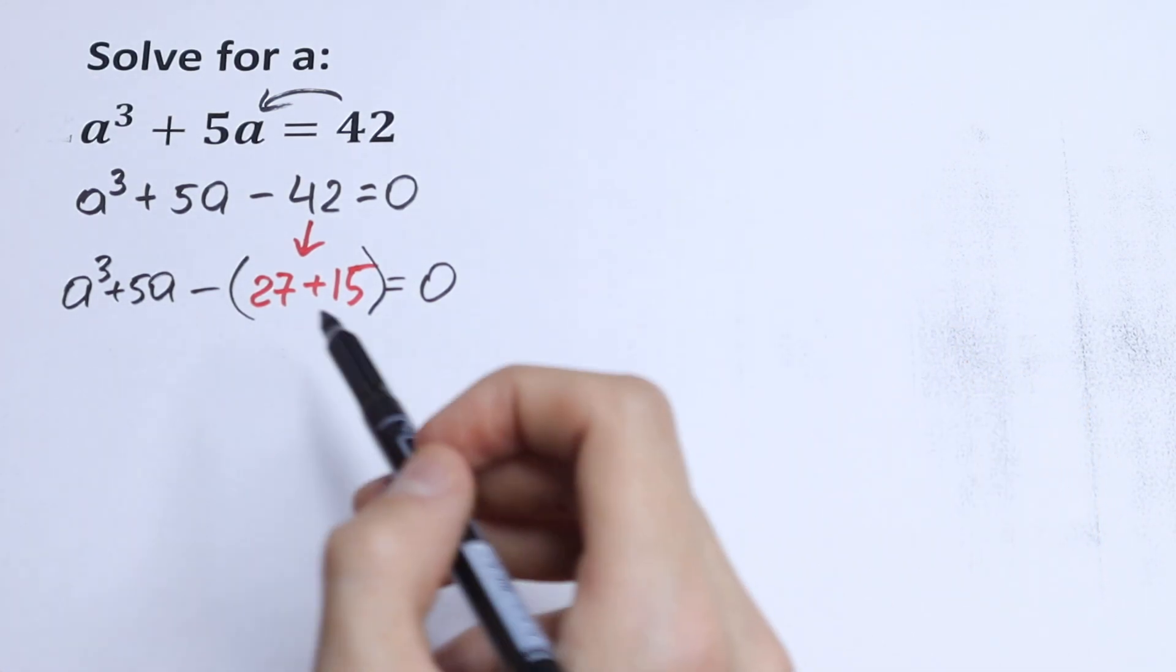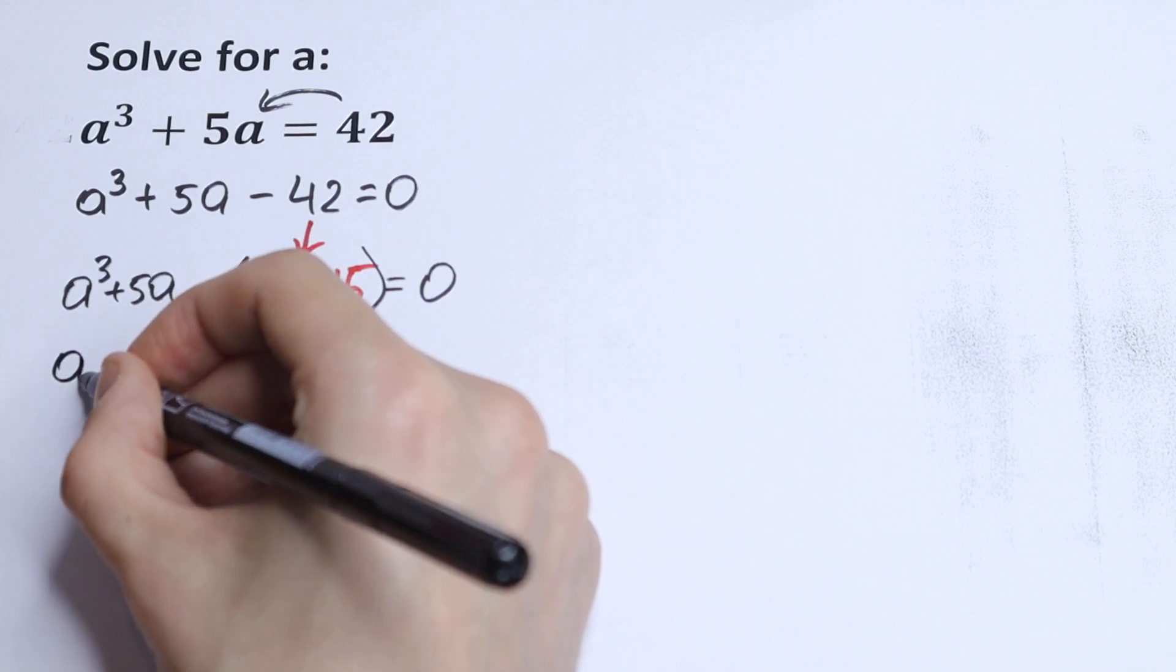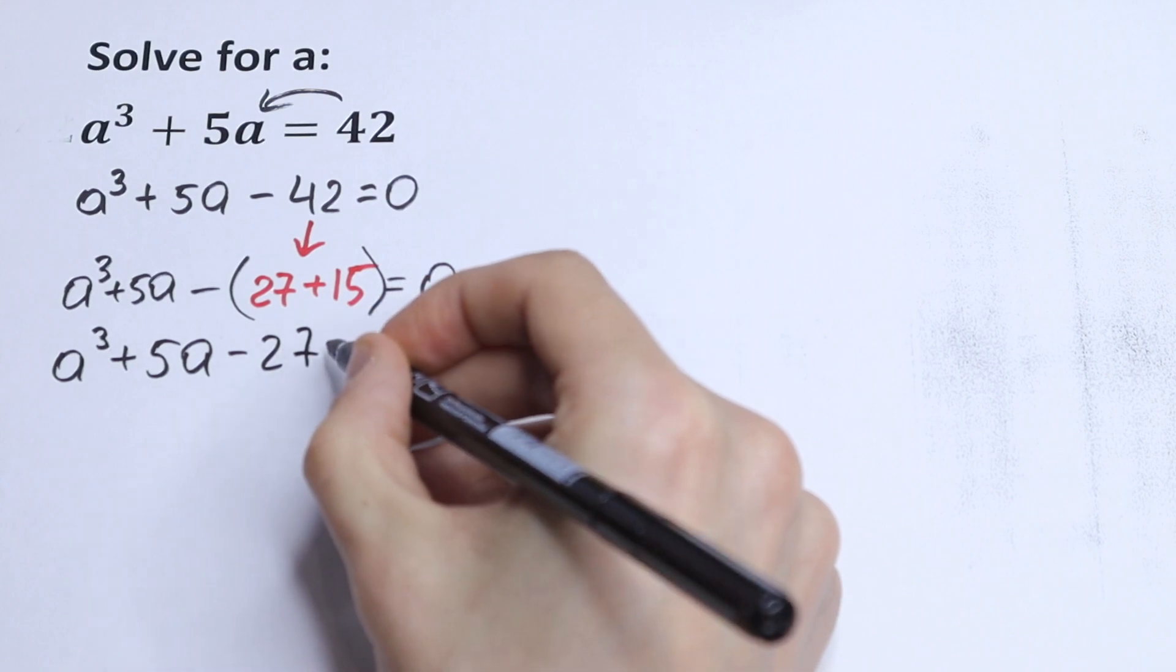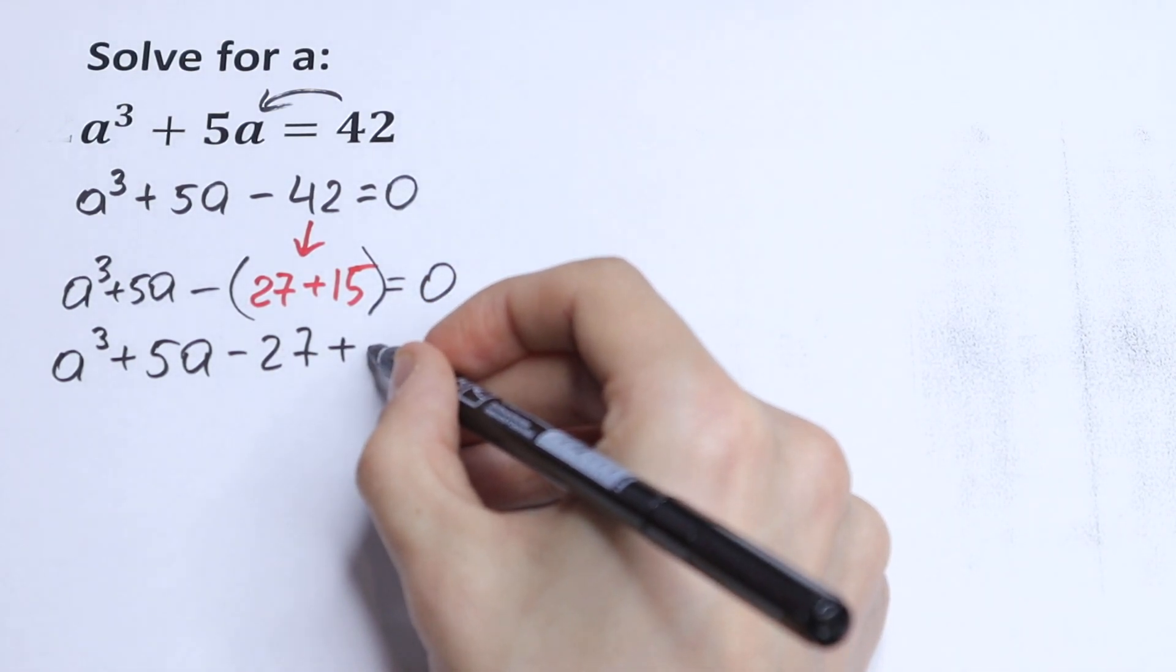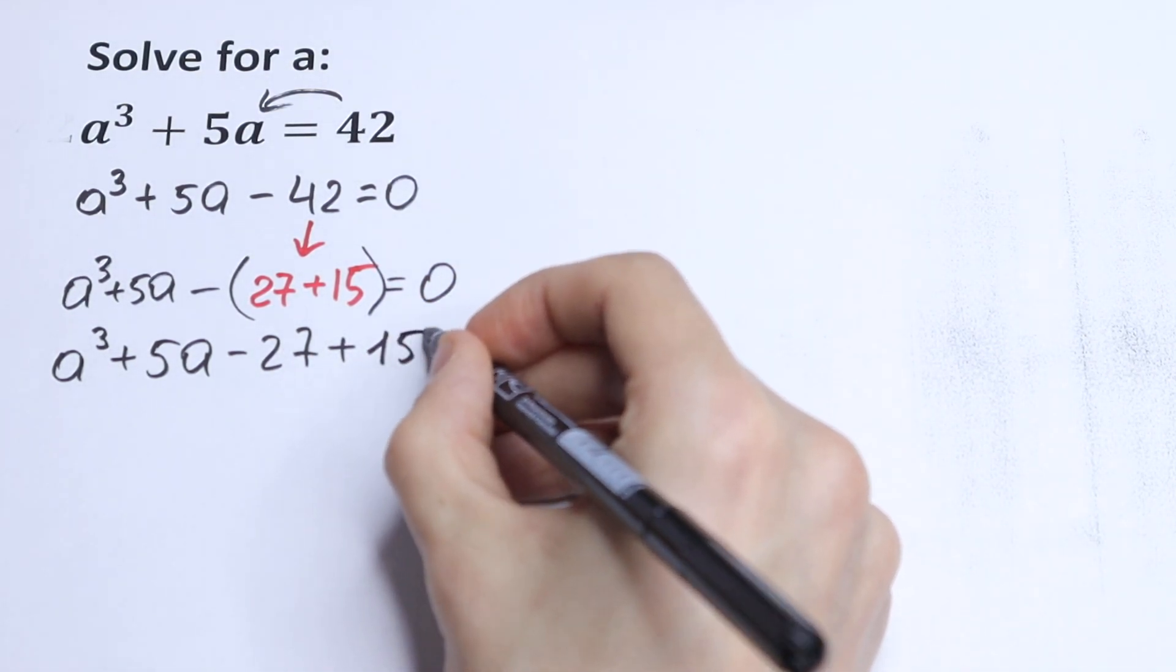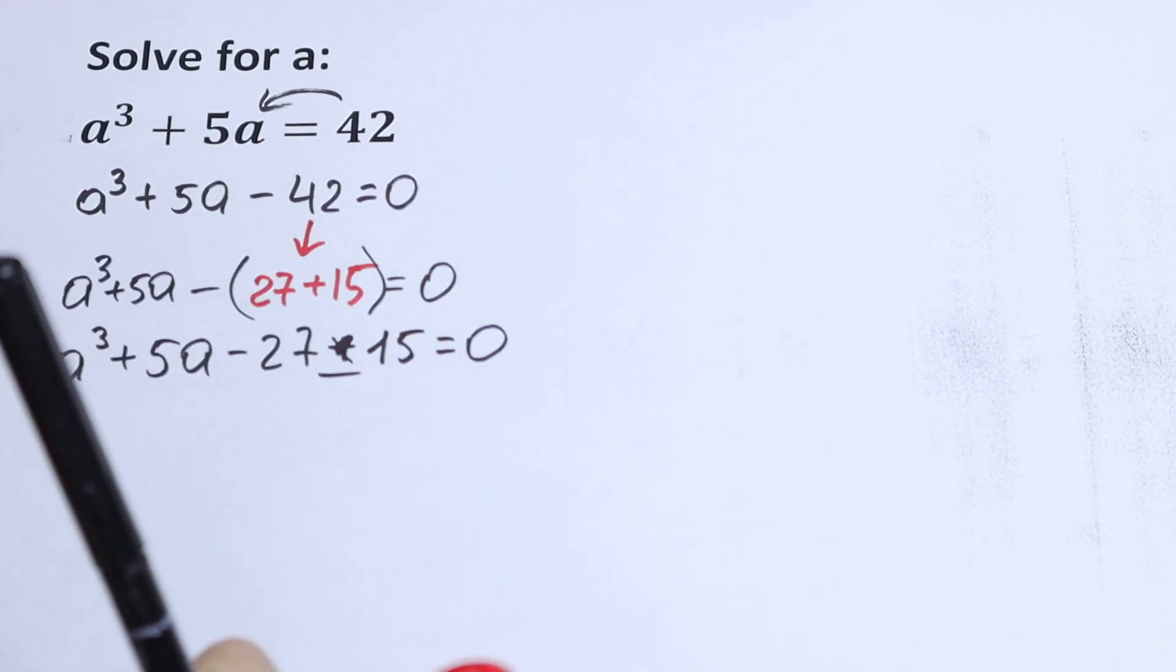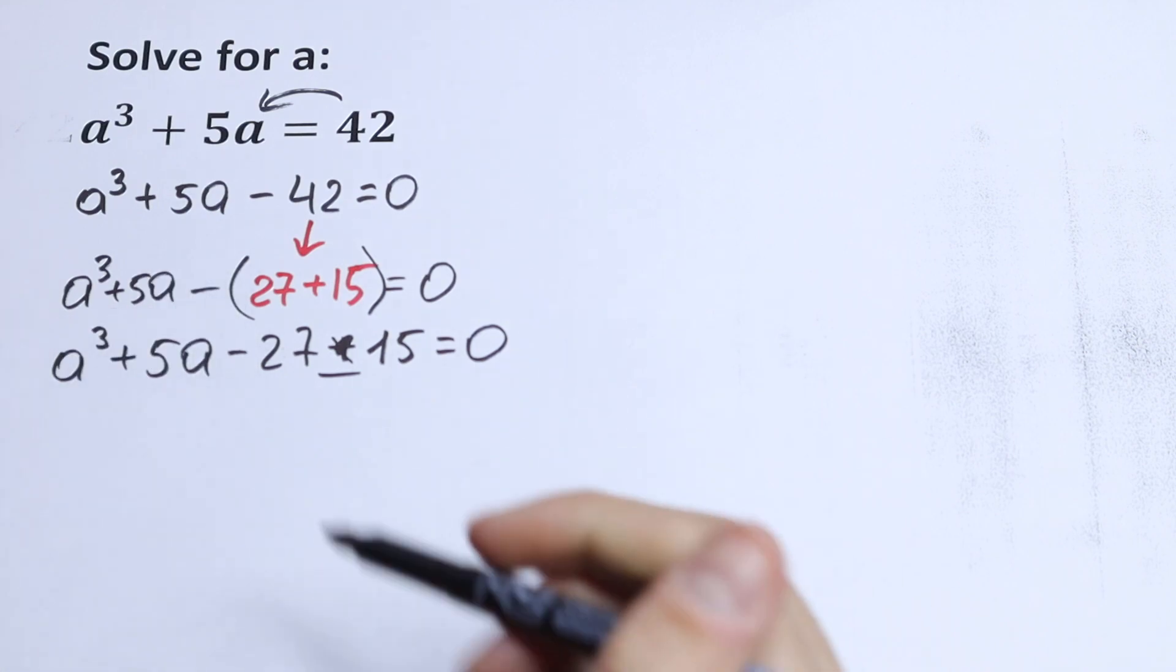What we're going to do next? Let's open our parentheses, so as a result we'll have a³ plus 5a minus 27 and plus 15. And minus 15, minus 15 equal to 0. Because we open our parentheses.